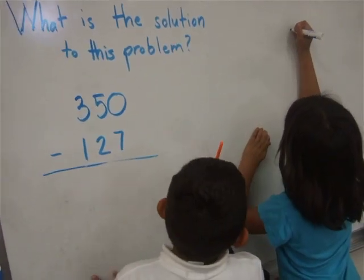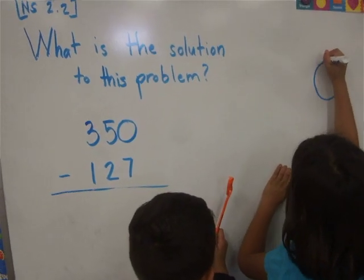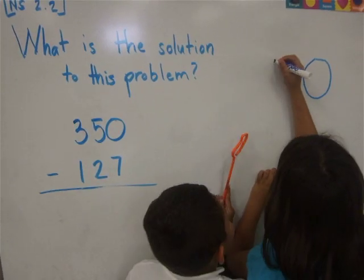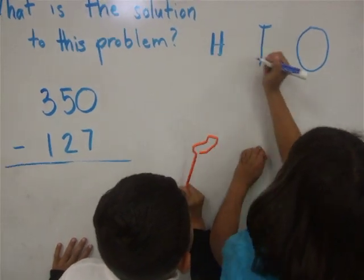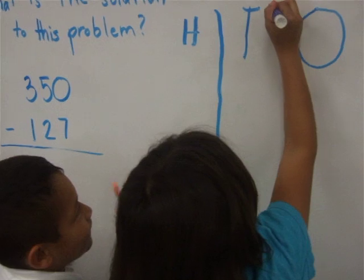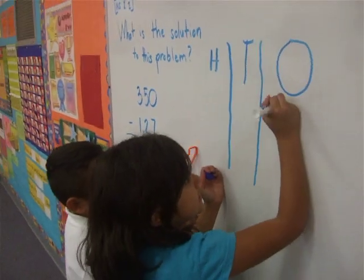First we write the tens, the ones, then the tens, then the hundreds. Then we write the lines, and then the boxes.